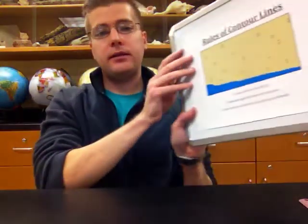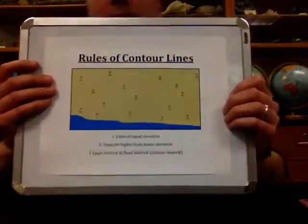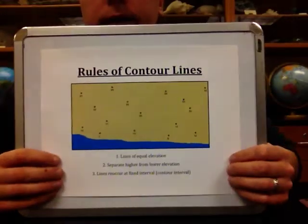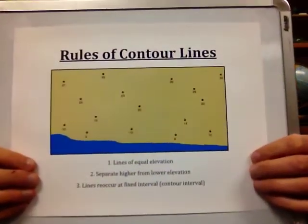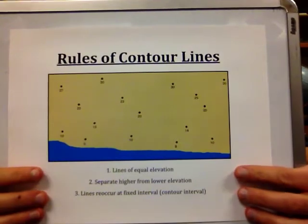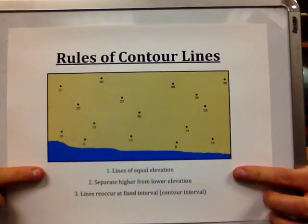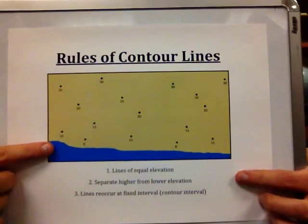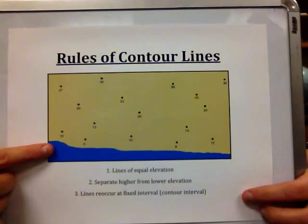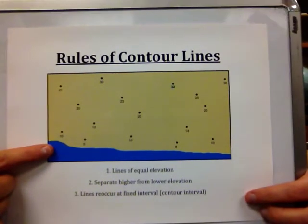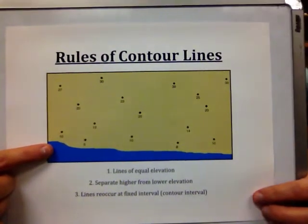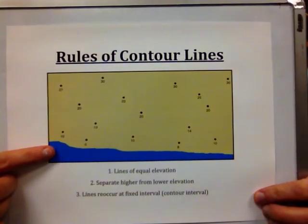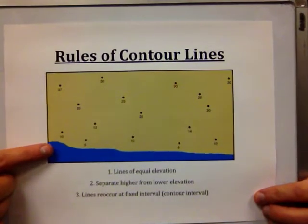Rules of contour lines are best displayed in examples that we will work through in this video. The first rule for contour lines is they are lines of equal elevation. Sea level is typically the reference point set to zero, and elevation is typically given in feet or meters, depending on what unit you're working in. Elevation refers to changes in the height of the land's surface above sea level.